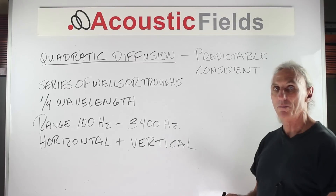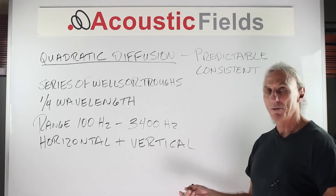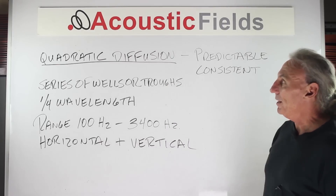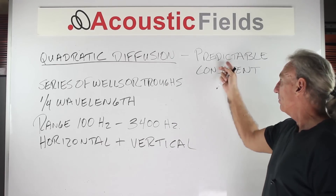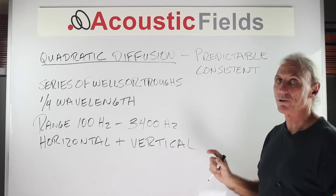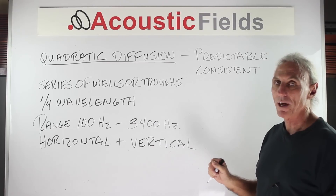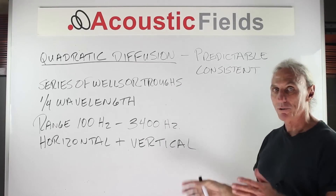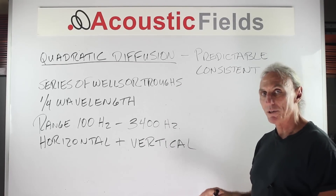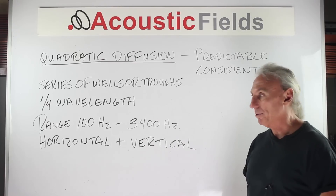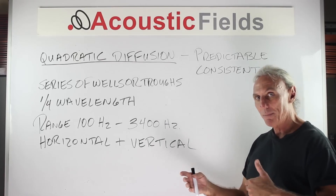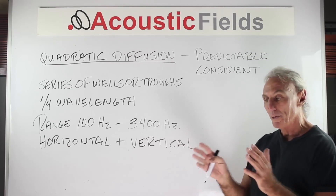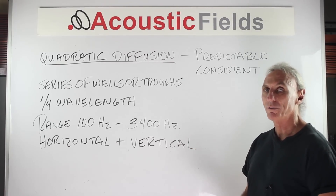We even have a series of kits you can buy. You can glue the pieces together yourself or build the units from drawings. We've worked with quadratic diffusion for over 25 years — it's predictable and consistent, and those are the two biggest variables you have to have in a room acoustic product. A quadratic diffuser is a series of wells or troughs with different depths. The depth is based on the quarter wavelength rule: whatever the depth is, multiply by four to get the frequency being diffused.